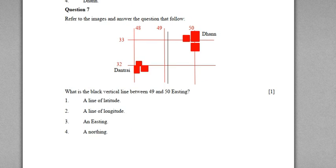Referring to the image with two settlements, eastings, northings, and a black line, the question is: what are the black vertical lines between eastings 49 and 50? This is a simple question because we know straight black lines on a topographical map are either lines of latitude or lines of longitude. Since it is a vertical line, it is the line of longitude.